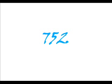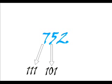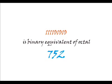For that, first we have to find out the 3-bit binary equivalent of 7, 5, and 2, and these are 1 1 1, 1 0 1, and 0 1 0 respectively. Now place these 3-bit binary equivalents of 7, 5, and 2 at their respective positions in the octal number.